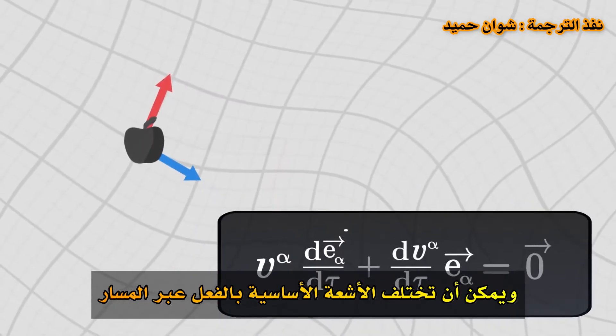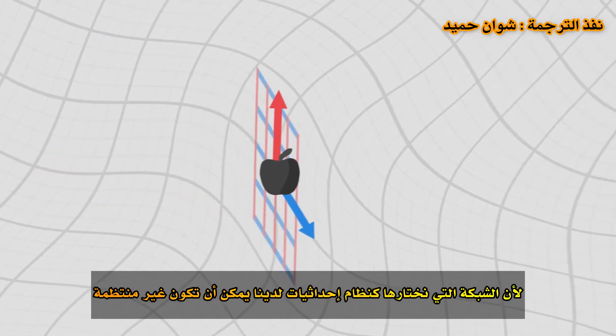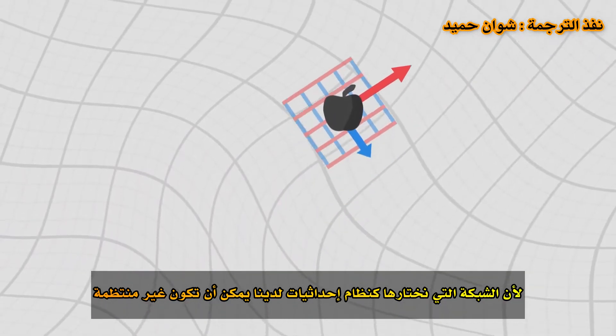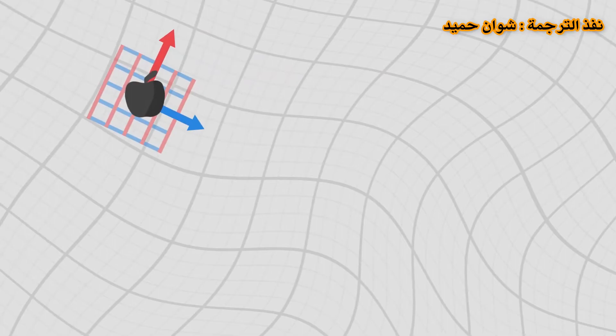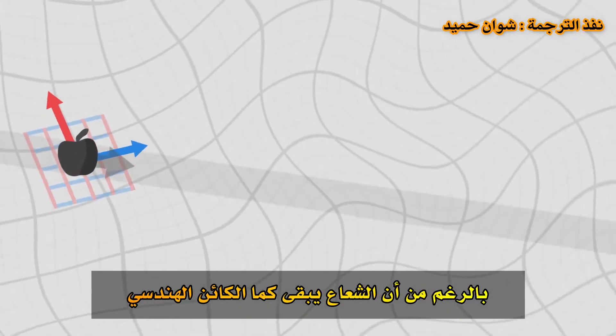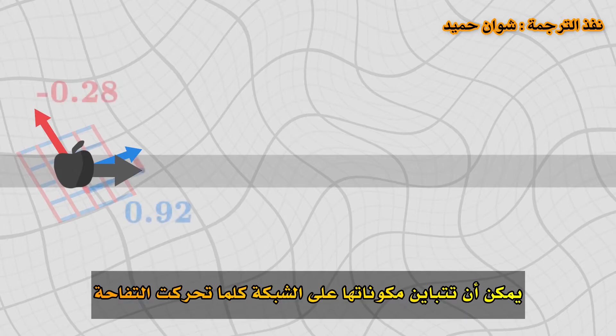The basis vectors can indeed vary throughout the trajectory, because the grid that we choose as our coordinate system can very well be irregular. Although the vector remains the same as a geometric object, its components on the grid can vary as the apple moves.